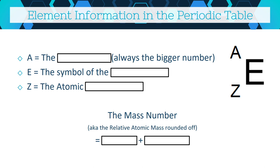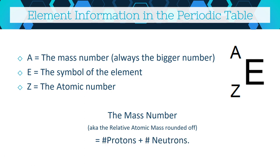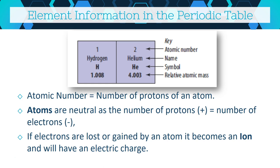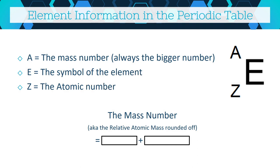You may also see notation written as A over Z with symbol E, where A is the mass number, Z is the atomic number, and E is the symbol. The mass number is the number of protons plus the number of neutrons. Your mass number can vary for different isotopes, and with the exception of hydrogen it's always going to be larger than the atomic number, because you're accounting for both protons and neutrons.